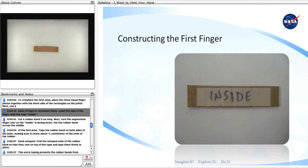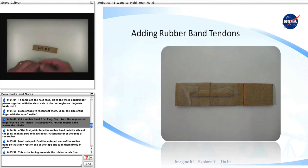Next, turn the segmented finger over so the inside is facing down. Label the side of the finger with the tape inside. Cut a rubber band 5 centimeters long.